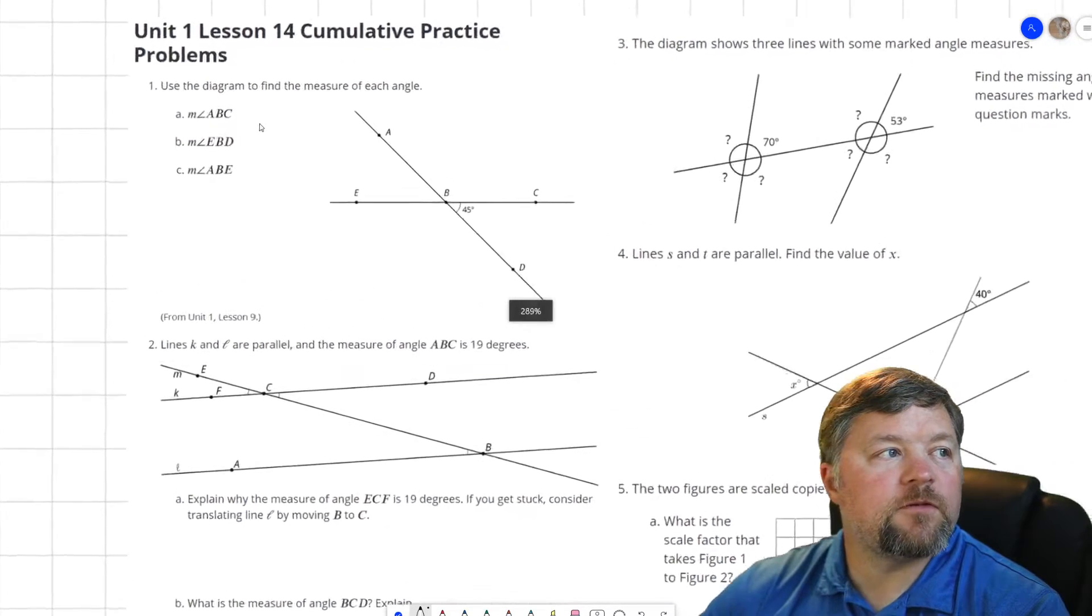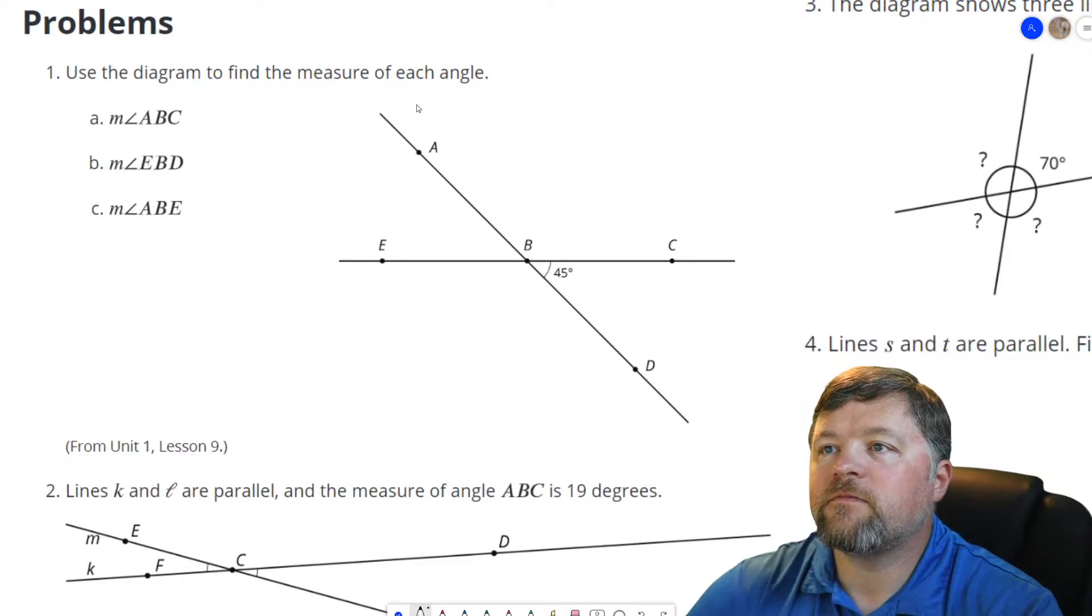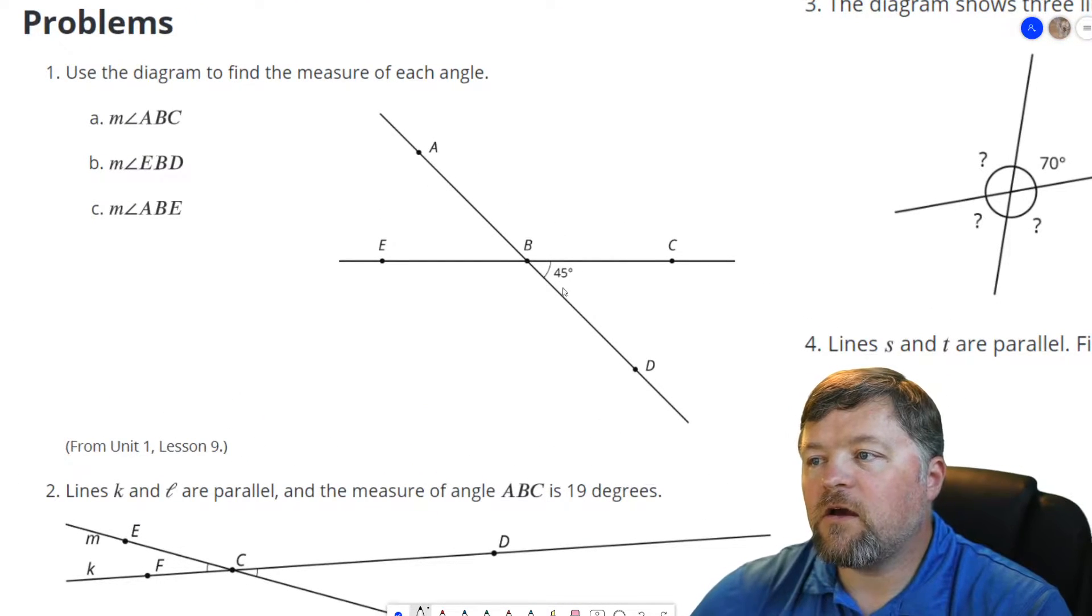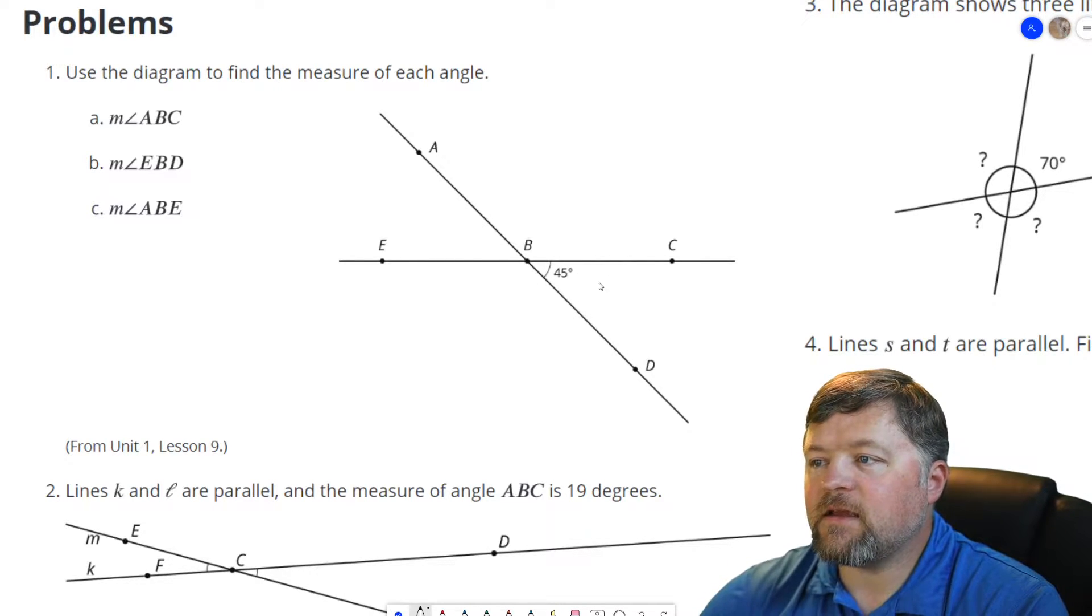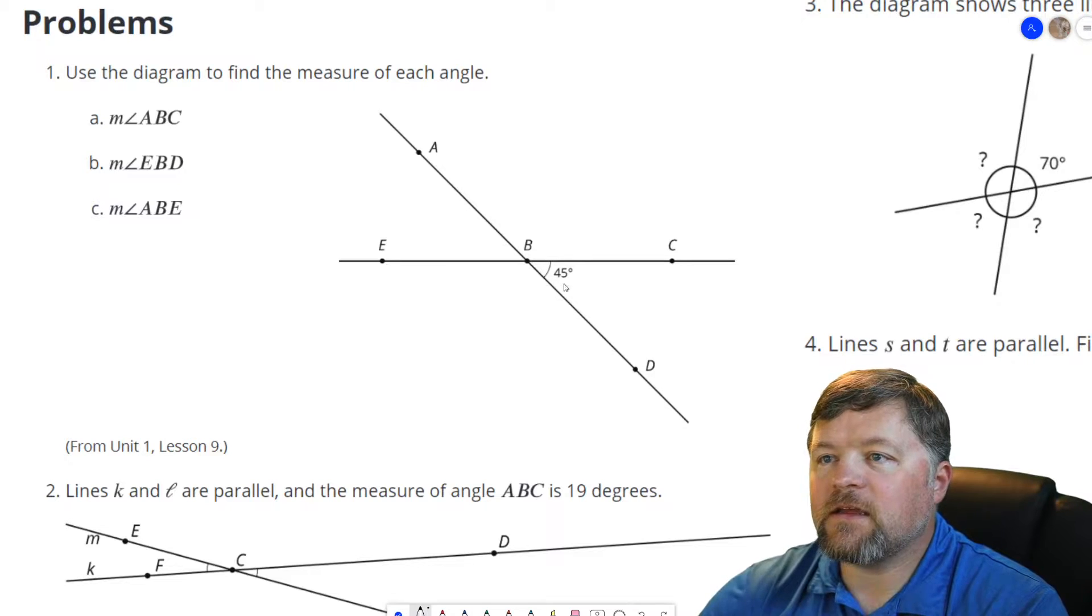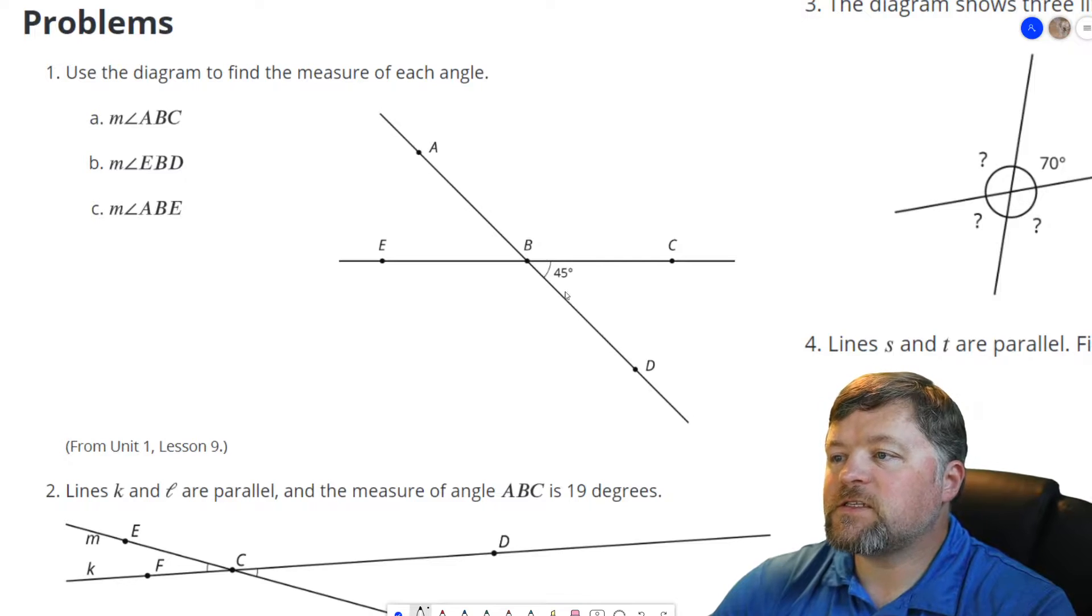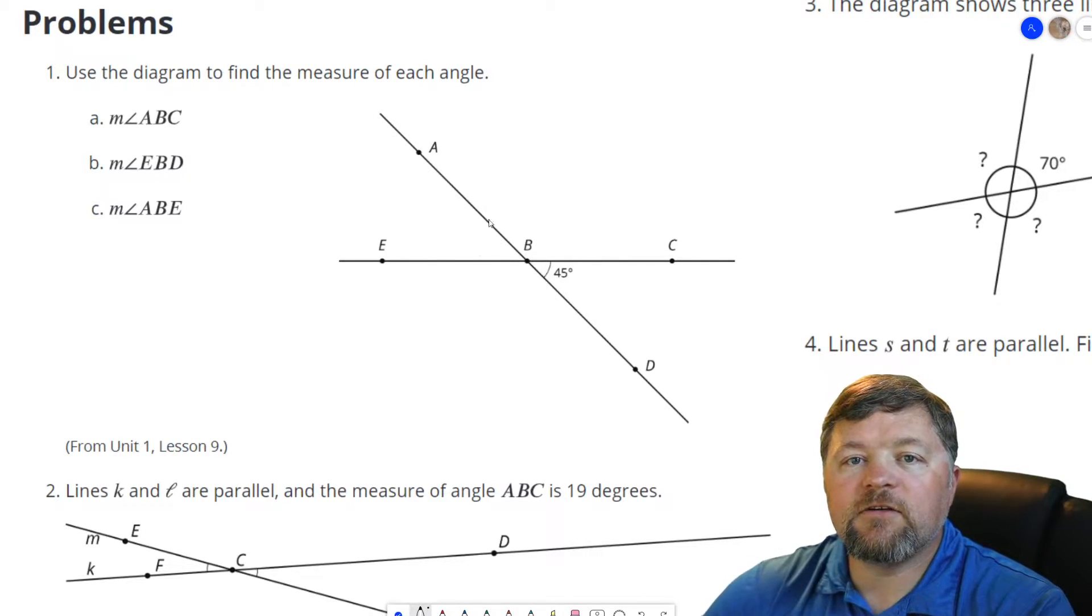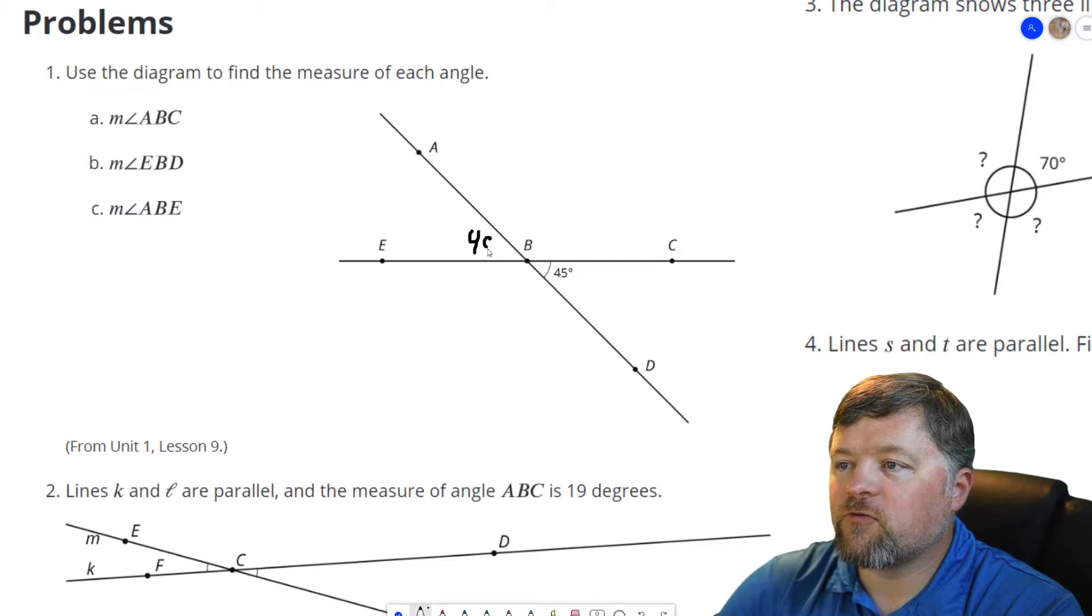Okay our first problem here says use the diagram to find the measurement of each angle. What do we know? We know the angle CBD is 45 degrees, so if this is 45 degrees using alternate interior angles that we've spoken about today, angle ABE also has to be 45 degrees.